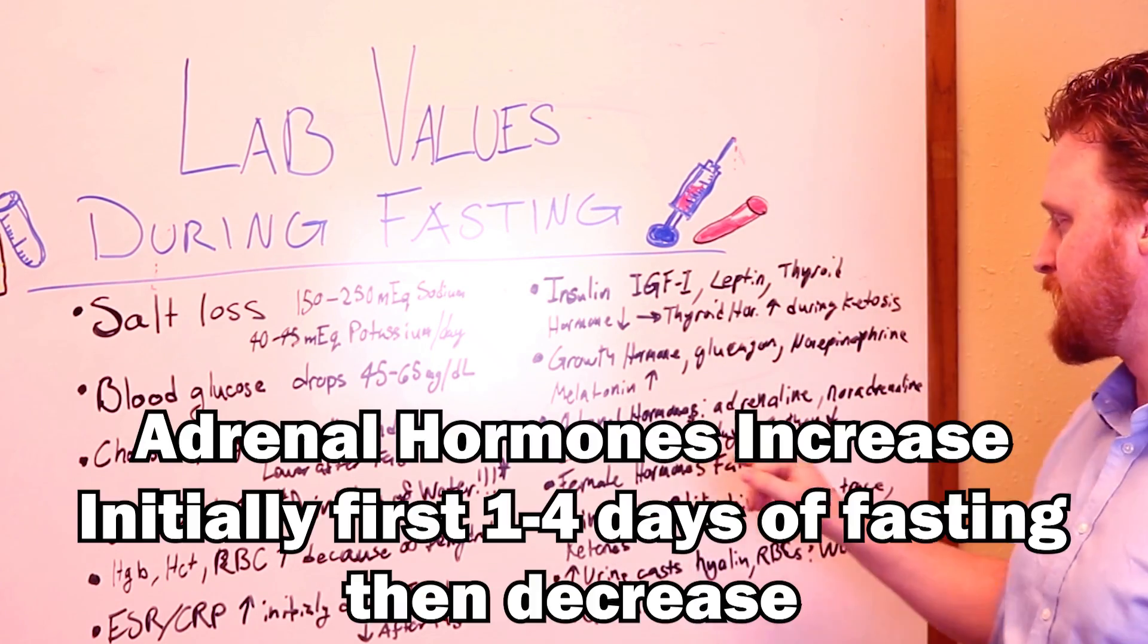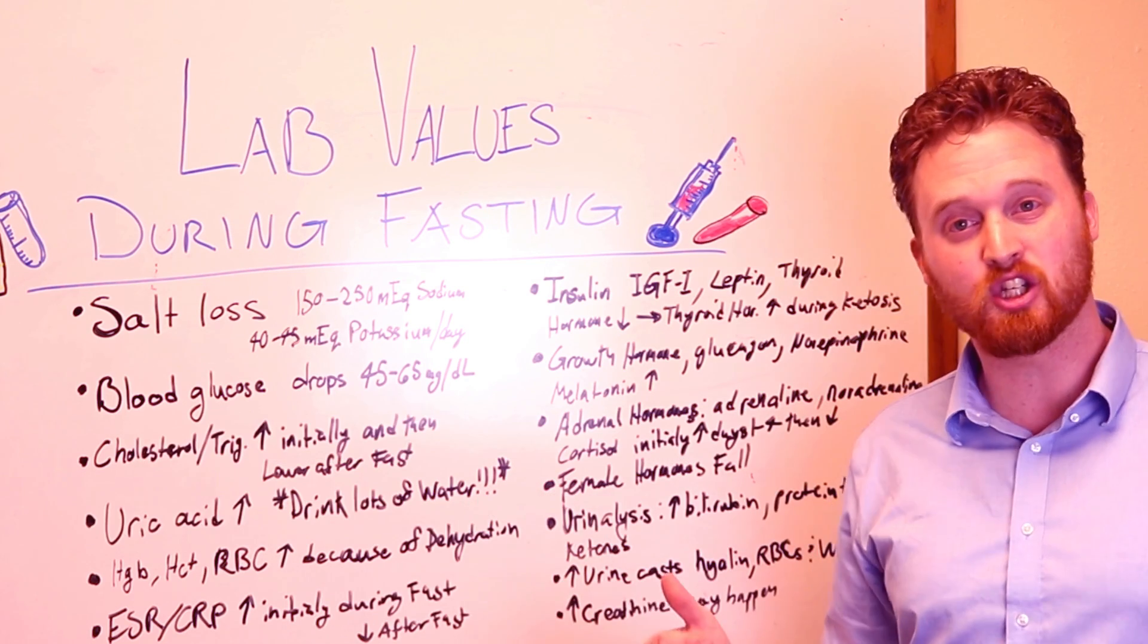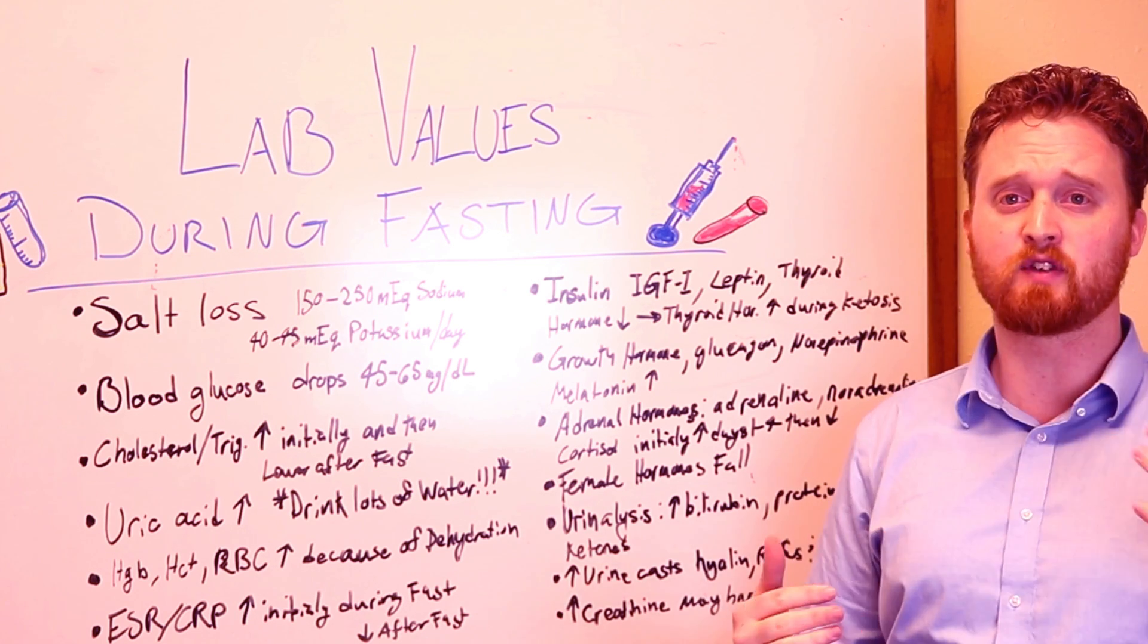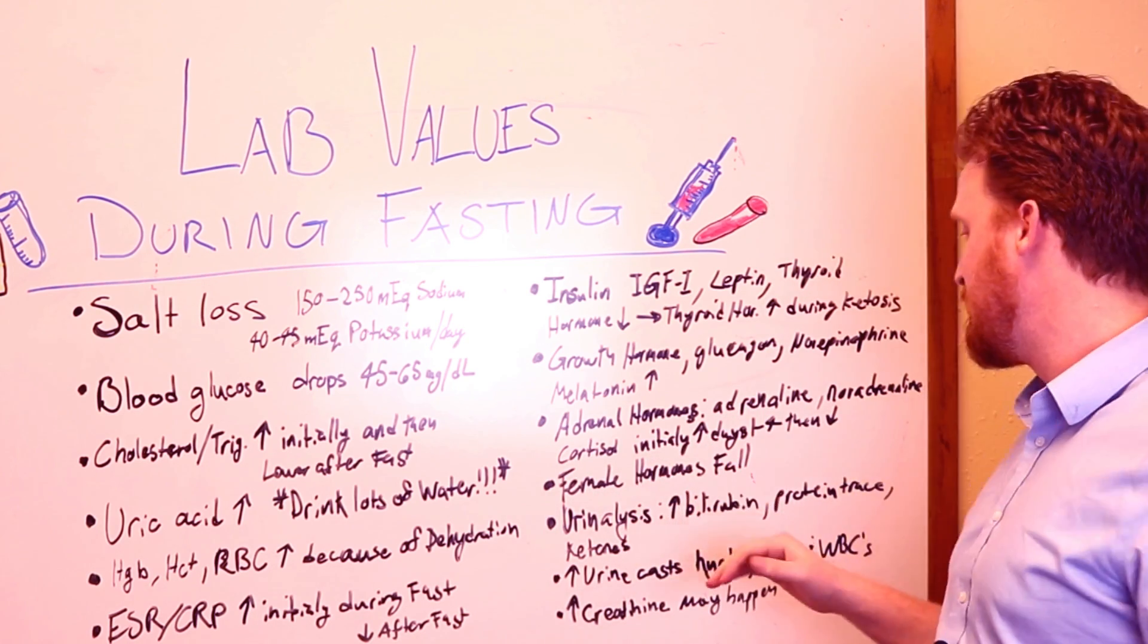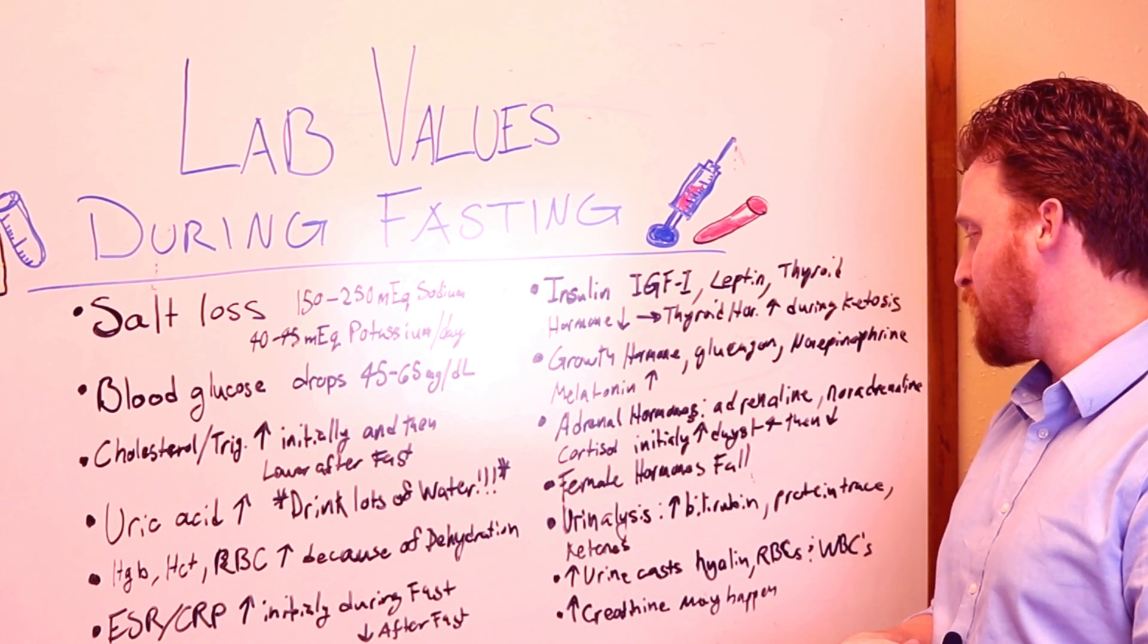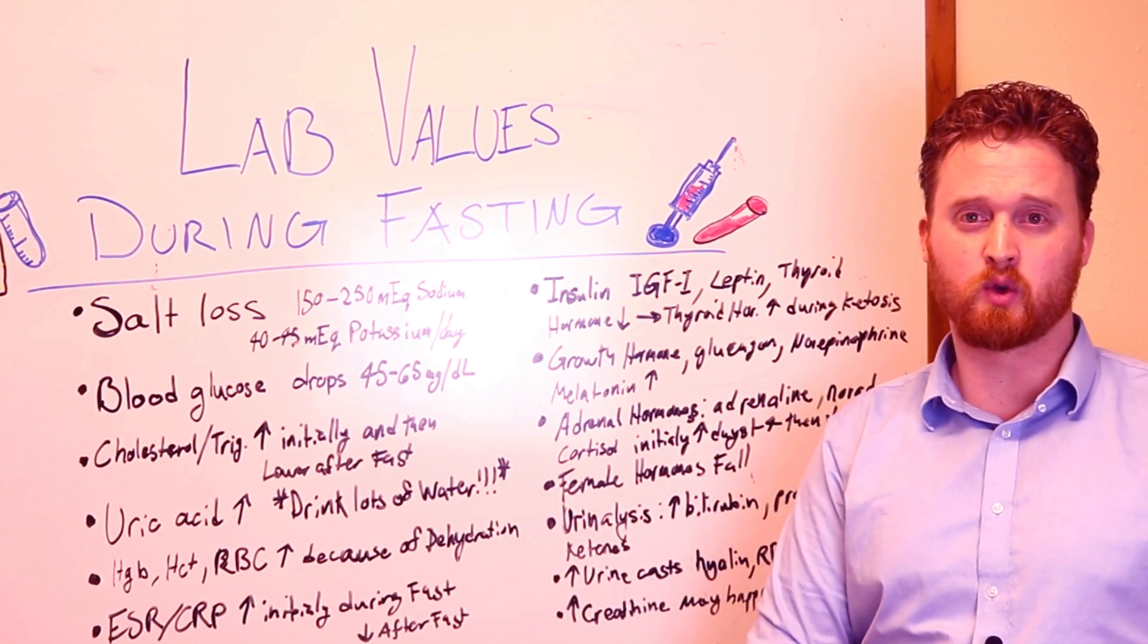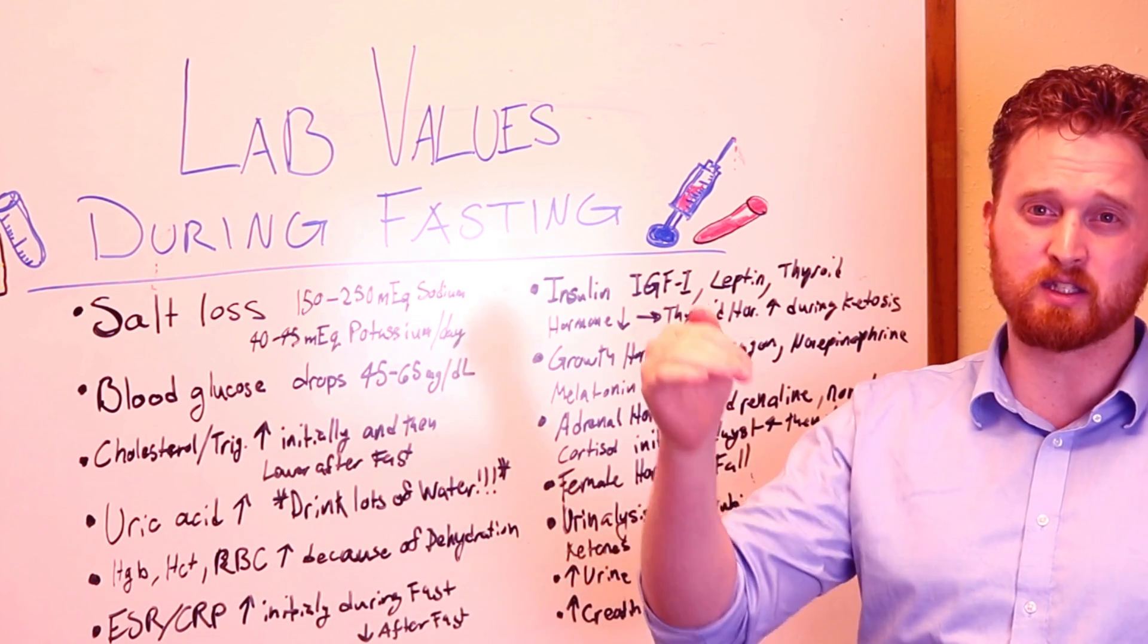The next thing is looking at adrenal hormones. Adrenal hormones do actually elevate initially when you are fasting. If we think about the adrenals, they sit right above the kidneys and they deal with a lot of different stress hormones. Ones that we're looking at is adrenaline that will increase initially, noradrenaline, and cortisol will also increase during fasting. This just happens initially and then it does stabilize. This happens through one to about four days through the initial fast, and after that it does decrease.